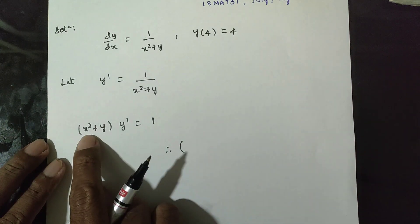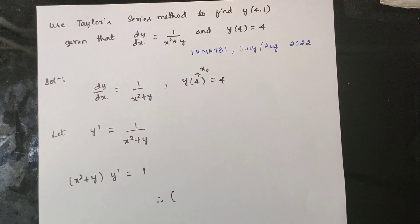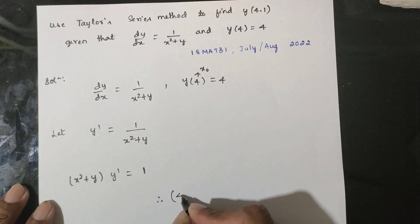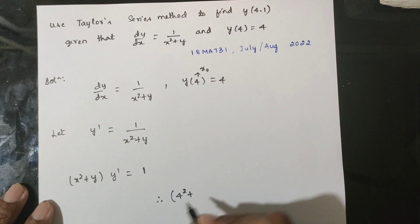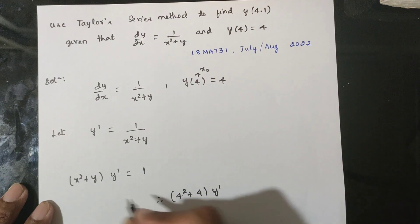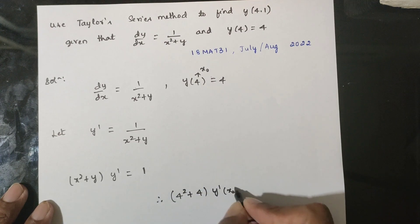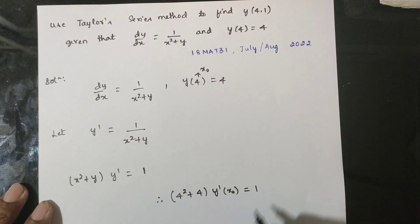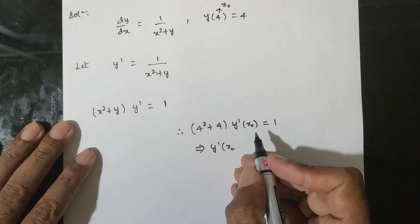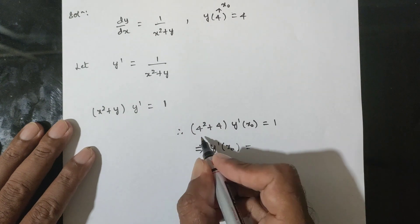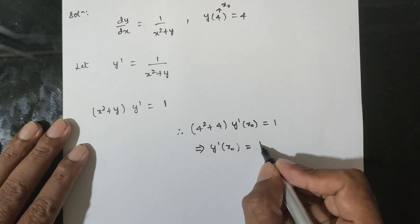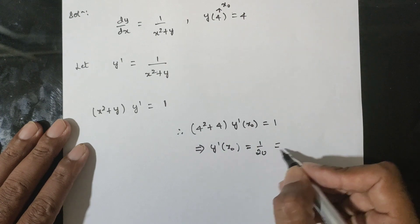At x₀ = 4, y₀ = 4. The x₀ value substituted: y-dash of x₀ equals 1 divided by (x₀² plus y₀). So y-dash of x₀ equals 1 divided by (4 squared plus 4), which is 16 plus 4 equals 20, giving y-dash equals 1/20 = 0.05.